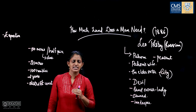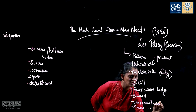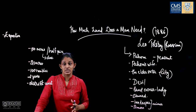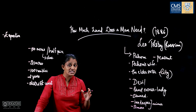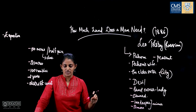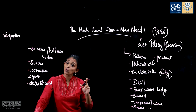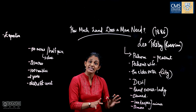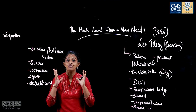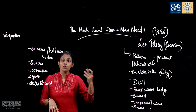Pahom became furious. He reported this to the judge, but the judge could not find solid evidence against Simon and let him go free. Pahom quarreled with the judge because of this. He just could not take it at all.